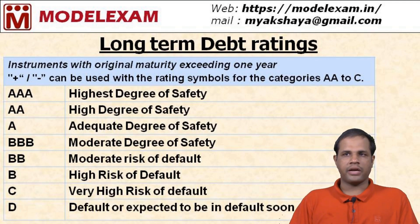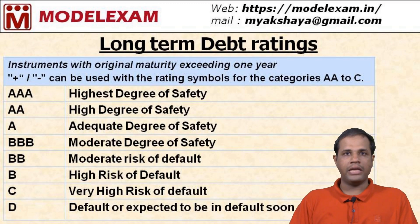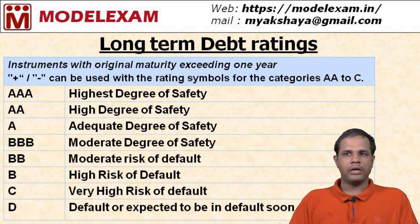BBB stands for moderate degree of safety with moderate risk of default. B indicates high risk of default. C indicates very high risk of default. D is the default category, or expected to be in default soon.